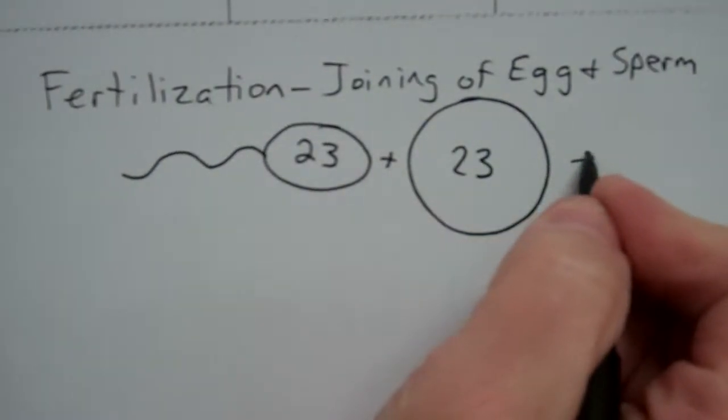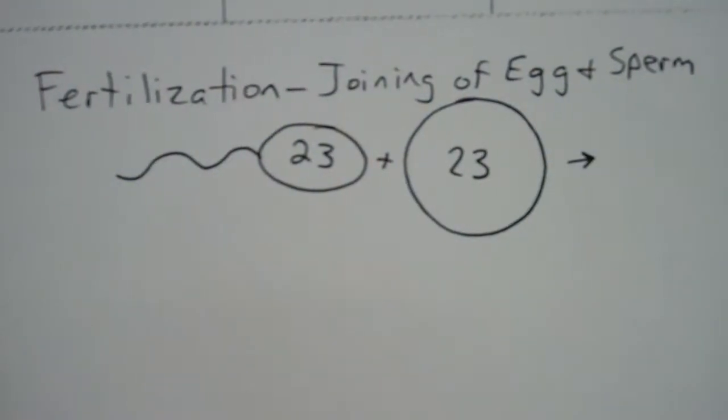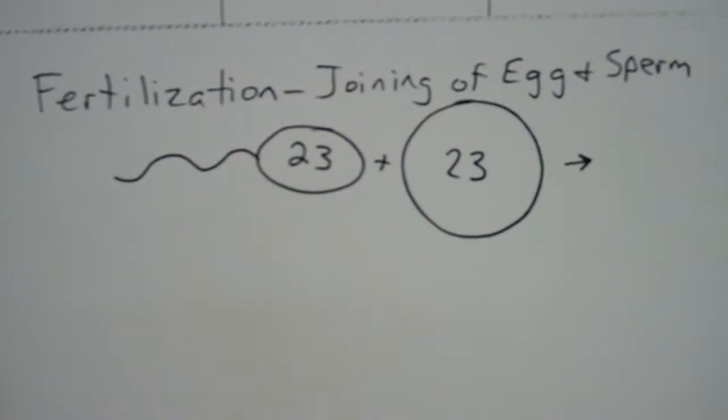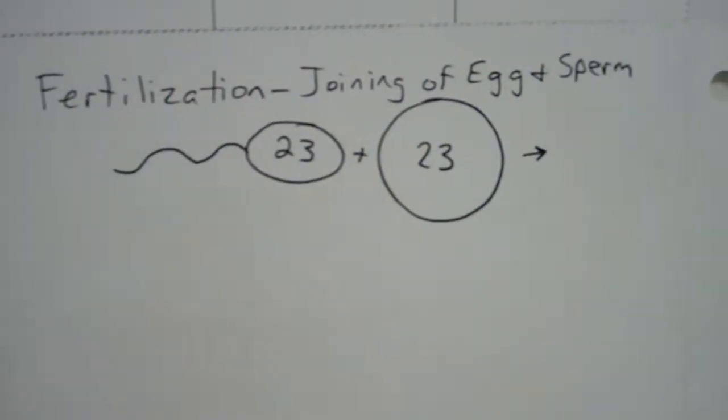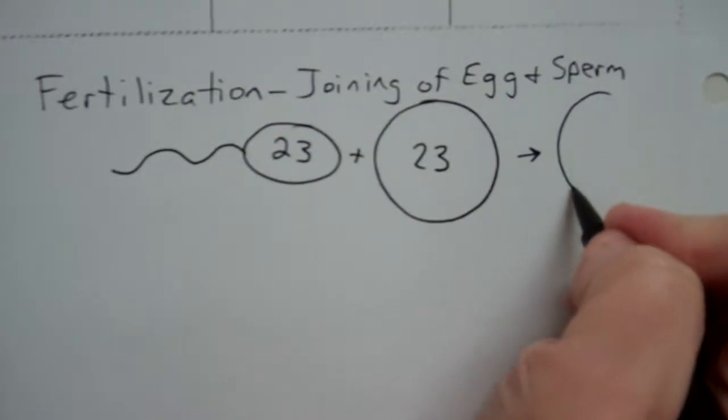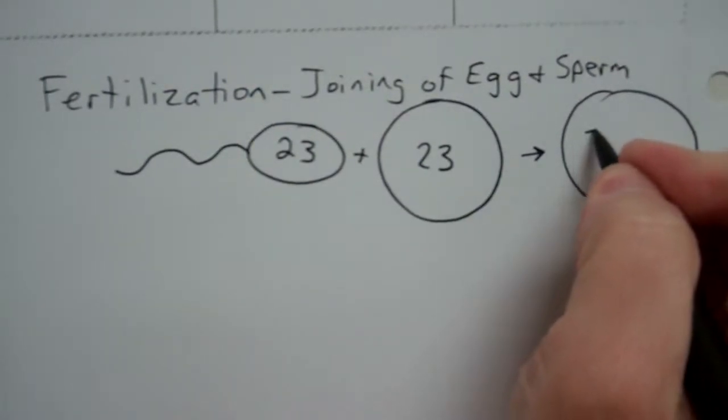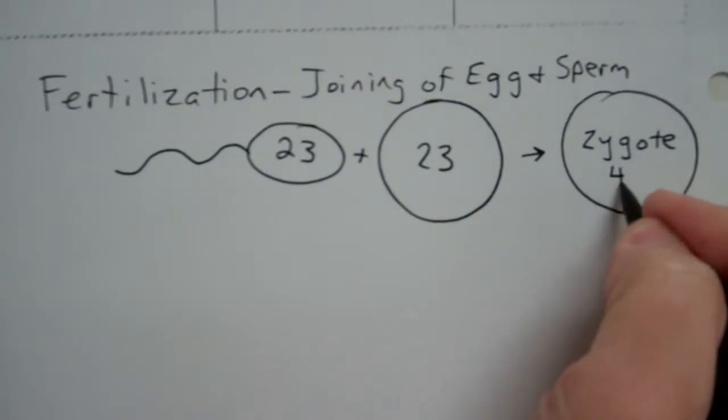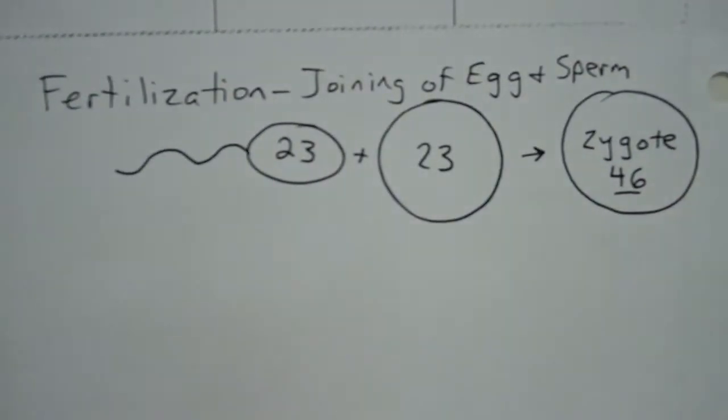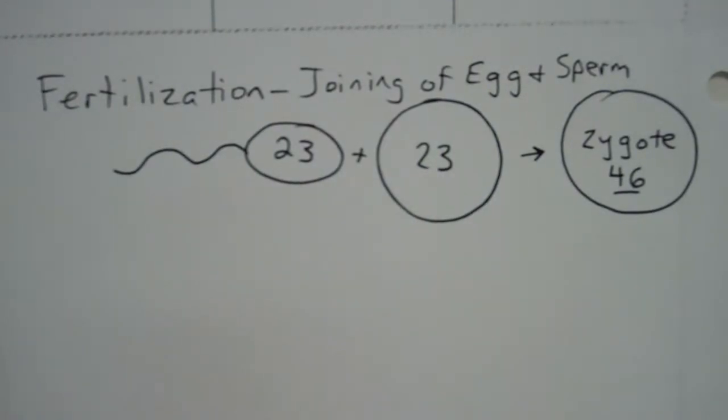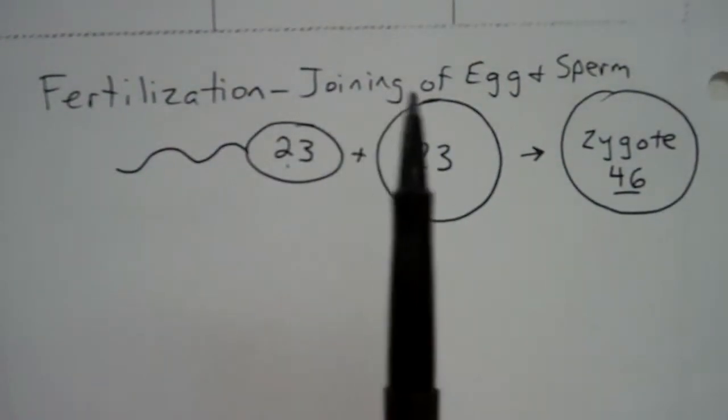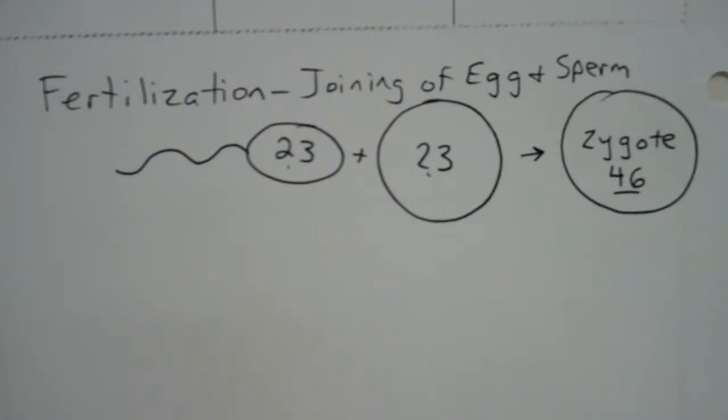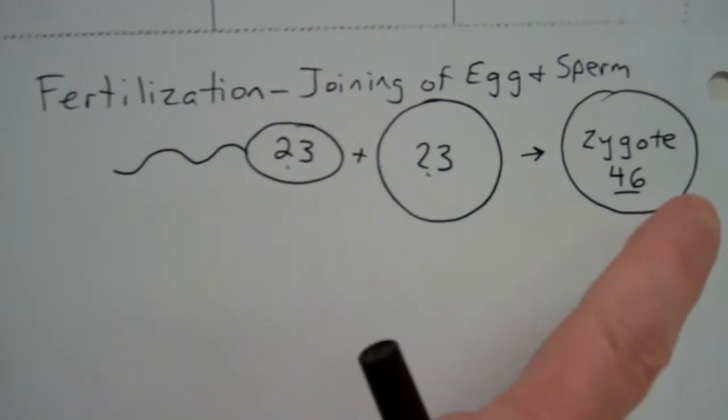So when the sperm and the egg unite, you will get a cell called a zygote. Now, the zygote has 46 chromosomes. And it's got a full set. It's got one set from the dad, one set from the mom. And so now you've got this zygote.